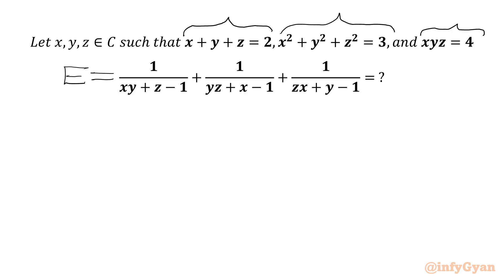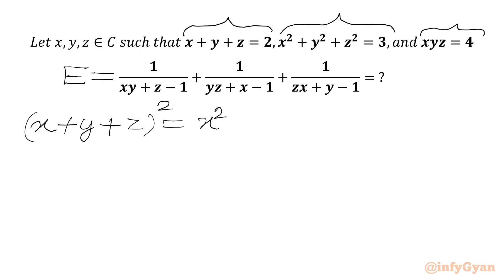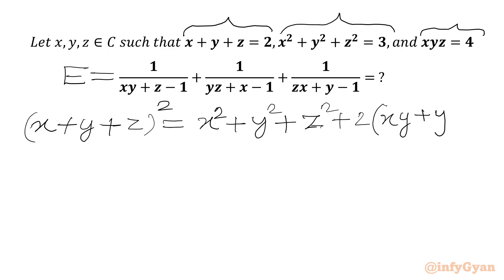Let's say the required expression is E. Now we will use one algebraic identity: x plus y plus z, whole square. This will be equal to x squared plus y squared plus z squared plus 2 times, in the bracket, xy plus yz plus zx.